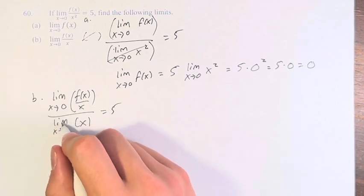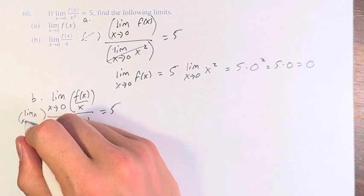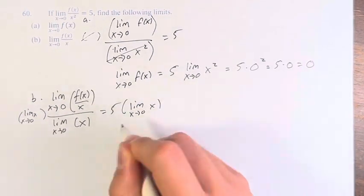Therefore, again, multiplying by this on both sides, the limit of x, the limit of x, these cancel.